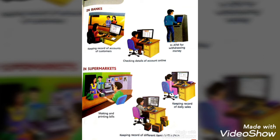Now the fourth place where we use computers is in supermarkets. The first use is making and printing bills. Jab hum dukaan mein samaan lene ke liye jaate hain, toh dukandaar — kaunsa samaan liya, kitna samaan liya, kaunsa samaan kitne price ka hai — woh saari details print karta hai. Computer se print out nikaal kar bill hume — customer ko — deta hai.